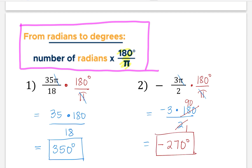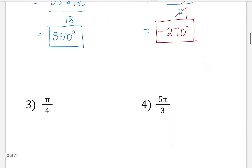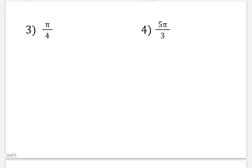Let's try this one more time. Given pi over 4, we're going to multiply by 180 over pi, then cancel out the pi. That will leave us with 180 on the numerator and 4 in the denominator. So 180 divided by 4 — that would be 45 degrees.